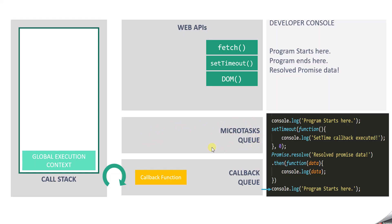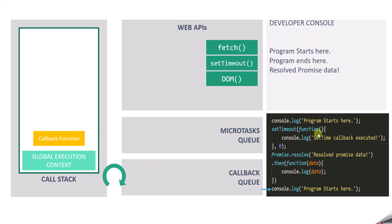In the callback queue, we only have one callback function. So this callback function will be pushed to the call stack by the event loop since the call stack is now empty. Inside this callback function, we are logging a message in the developer console, so this message will be logged and the execution of this callback function completes and it pops off the execution stack.